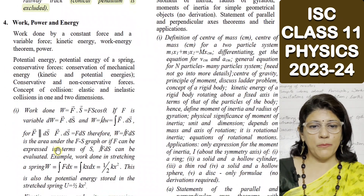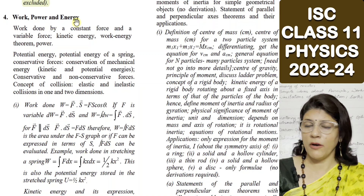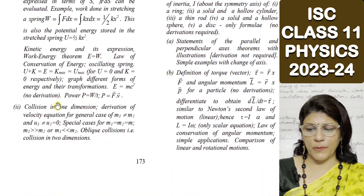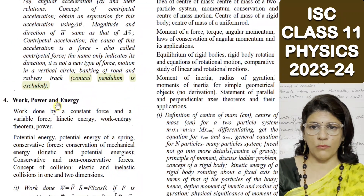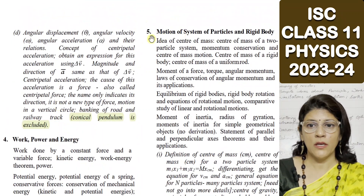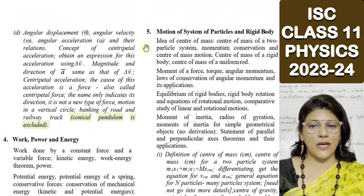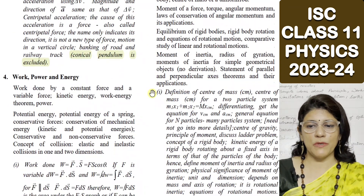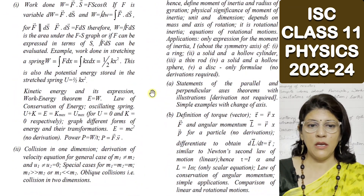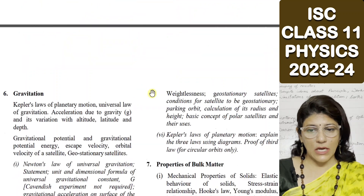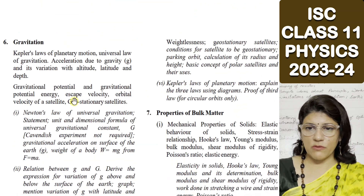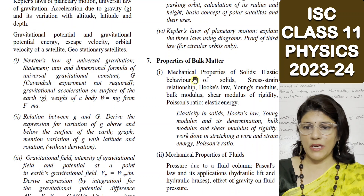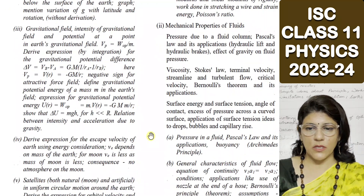The fourth unit, Work, Energy and Power, has no changes to note — nothing has been reduced there. The fifth unit, Motion of System of Particles and Rigid Body, also has no major changes. The sixth unit, Gravitation, similarly has no changes. The seventh unit, Properties of Bulk Matter, also has no changes — Surface Tension is shown on screen and remains as is.